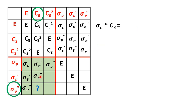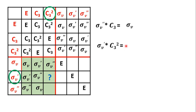For sigma V dash times C3 square, sigma V dash is already present in that row along with sigma V double dash, so this should be sigma V. For C3 square followed by sigma V double dash, sigma V double dash and sigma V are already present, so there cannot be any repetition — it must be sigma V dash. This completes the third quadrant.